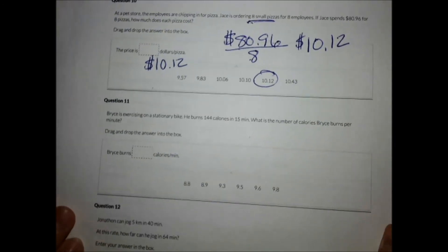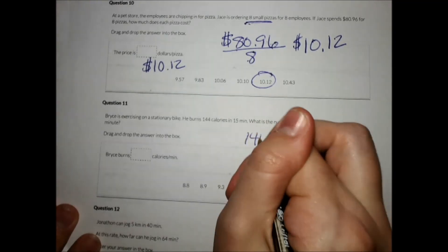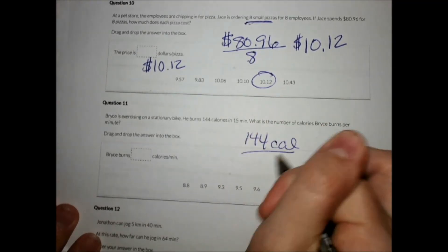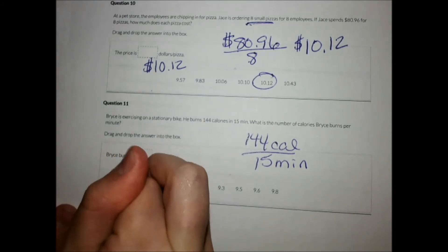Number 11. Bryce is exercising on a stationary bike. He burns 144 calories in 15 minutes. What is the number of calories Bryce burns per minute? So calories per minute. All I'm going to do is divide 144 divided by 15, and I do get 9.6.